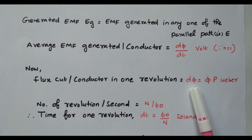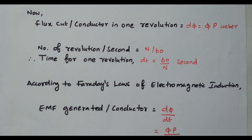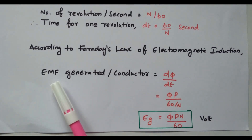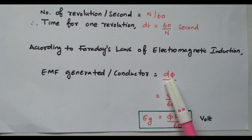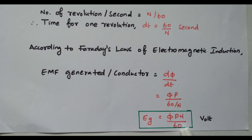Now we have the value of dφ as well as dt. According to Faraday's law of electromagnetic induction, EMF generated per conductor equals dφ/dt = φP divided by (60/N), so N goes to the numerator, giving φPN/60 volts. This EMF depends upon the flux available, the number of poles, and the speed of the generator divided by 60.